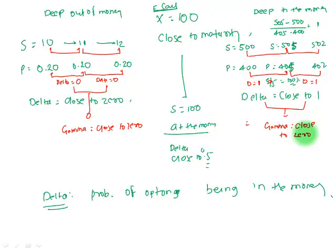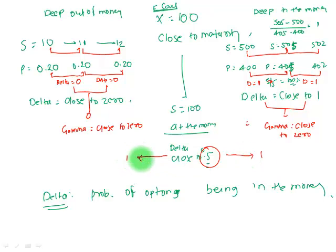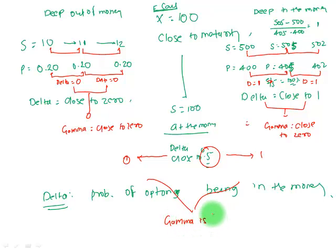When options are deep out of the money, Delta remains 0 and doesn't change, so Gamma is 0. When options are deep in the money, Delta remains 1 and doesn't change, so Gamma is again 0. But when you're at the money with Delta close to 0.5 — if the price increases, that 0.5 moves toward 1; if price decreases, it moves toward 0. So Delta changes really fast at the money, from 0.5 to 0.6, 0.7 and upward. Therefore, Gamma is highest when options are at the money, and close to zero when deep in the money or deep out of the money.